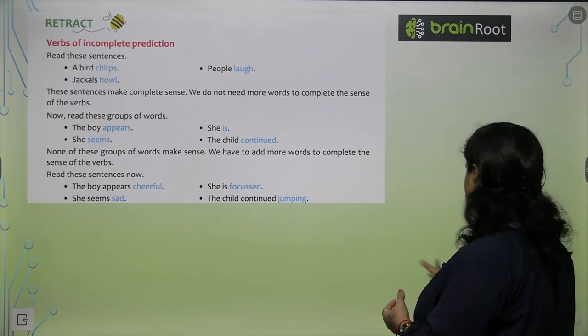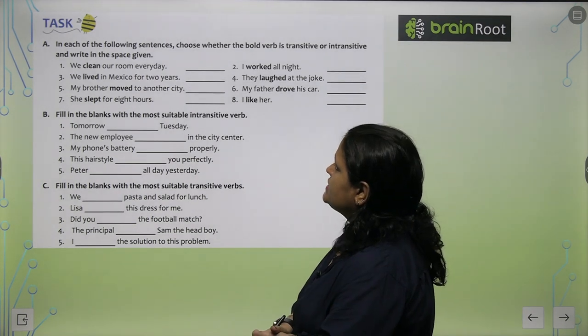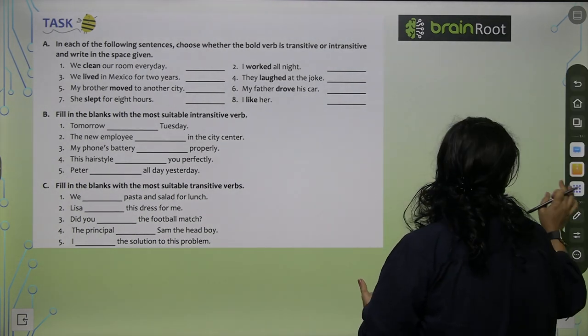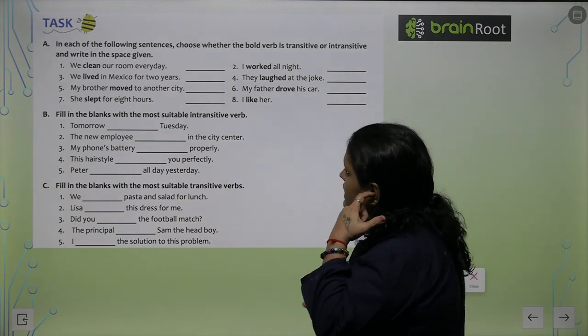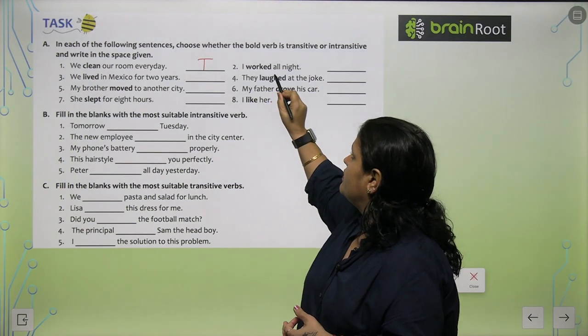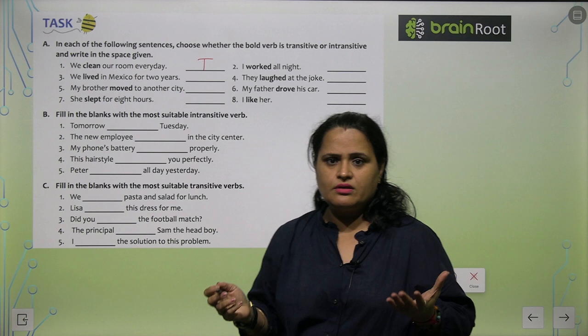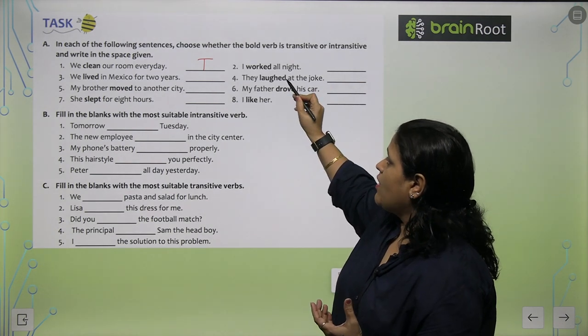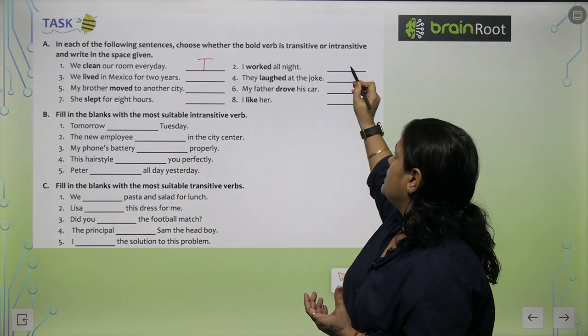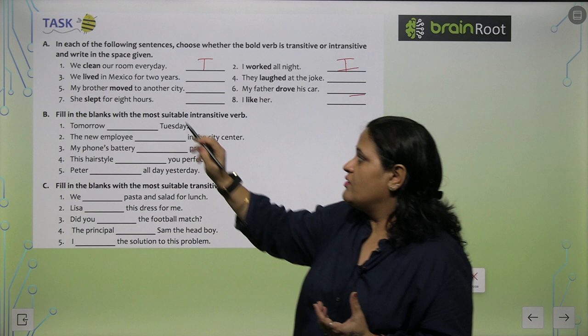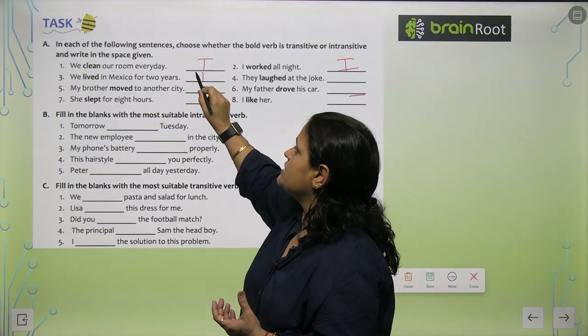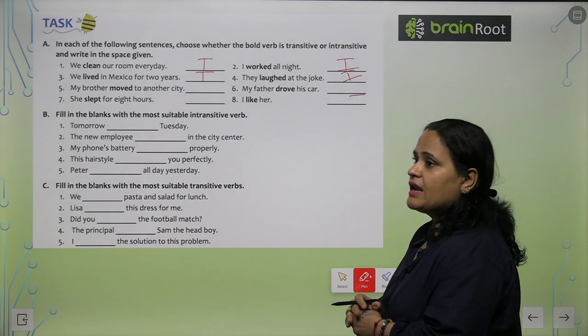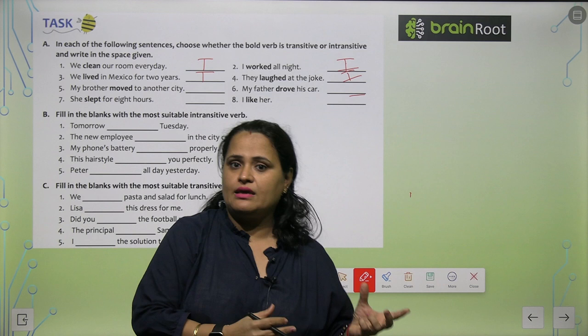Now we do the exercises here. In each of the following sentences, choose whether the bold word is transitive or intransitive and write in the space given. We clean our room every day. I worked all night. I worked, clear ho raha hai aapko? Mainne kaam kiya. Is me aapko kisi bhi object ki need nahi hai aur na yaha par koi object hai, so ye ho jayegi aapki intransitive verb.